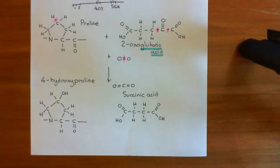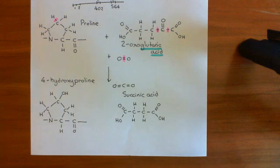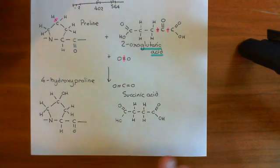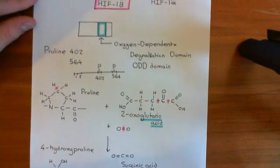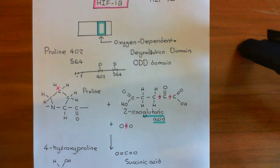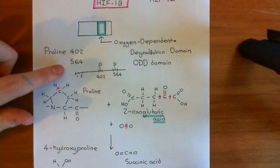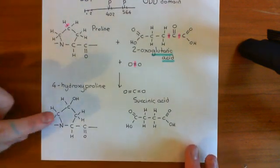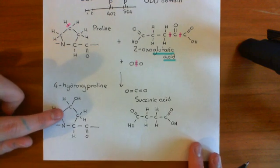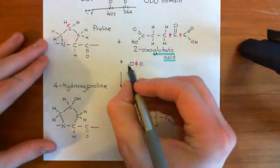Hypoxia-inducible factor 1-beta is always present within the cytoplasm of cells, but hypoxia-inducible factor 1-alpha is not — not because it isn't synthesized, but because the moment it is synthesized, it is destroyed. We are currently discussing how it is destroyed. HIF-1α has a special domain known as the oxygen-dependent degradation domain (ODD), which contains proline 402 and proline 564. These prolines get hydroxylated on their fourth carbon, and this process requires oxygen.